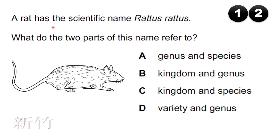A rat has the scientific name Rattus rattus. What do the two parts of this name refer to? The first Rattus refers to the genus and the second Rattus refers to the species.